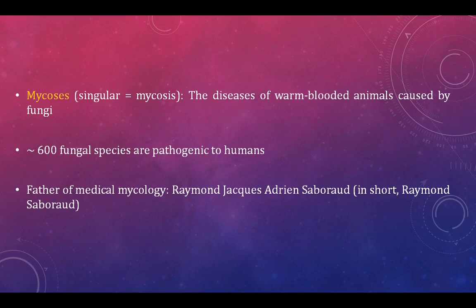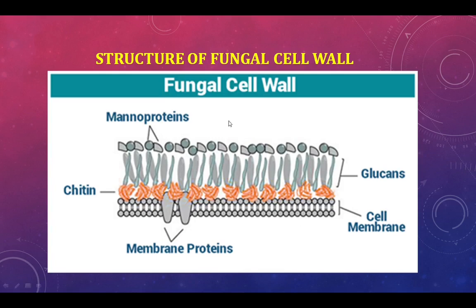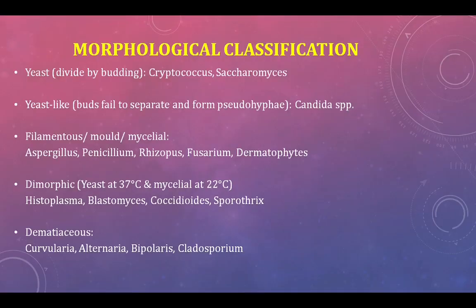There are about 600 fungal species that can cause infection in humans. The father of medical mycology is Raymond Sabouraud — his full name is Raymond Jacques Adrien Sabouraud. The fungal cell wall consists of mannoproteins, glucans, and a chitin layer, along with a cell membrane with membrane proteins. Fungi can be divided into yeast, yeast-like, molds or filamentous/mycelial, dimorphic, and dematiaceous fungi.